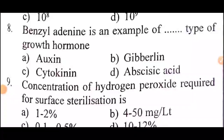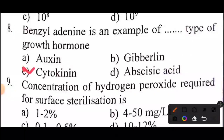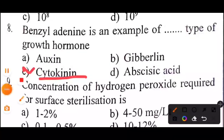Next question: Benzyl-89 is an example of a dash type of growth hormone. Answer: It is a cytokine.